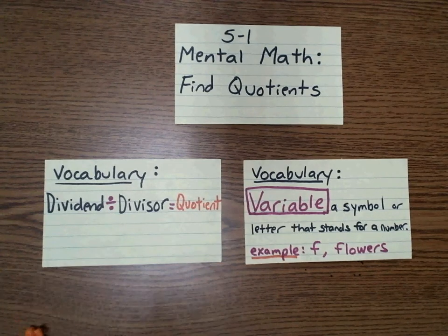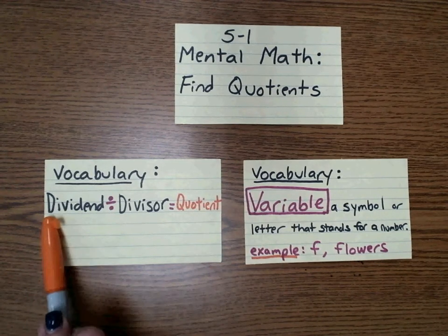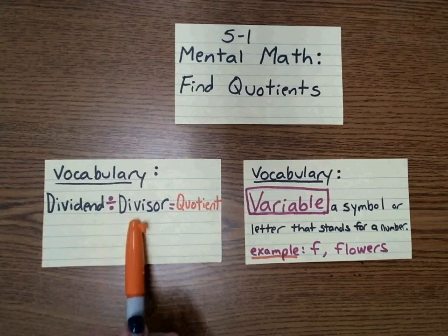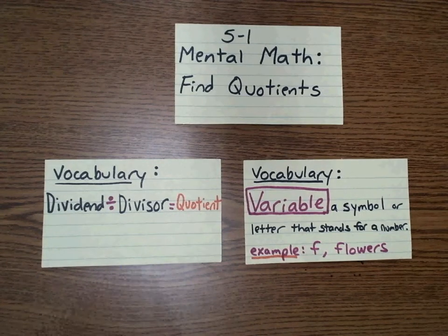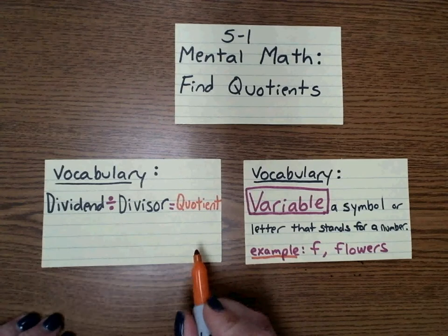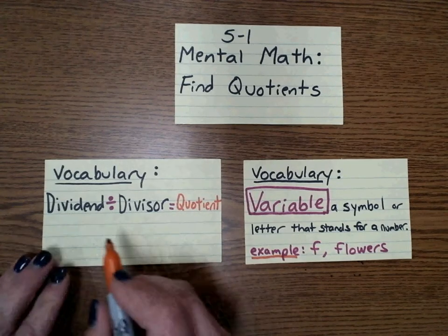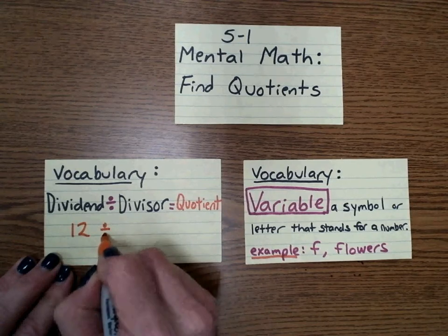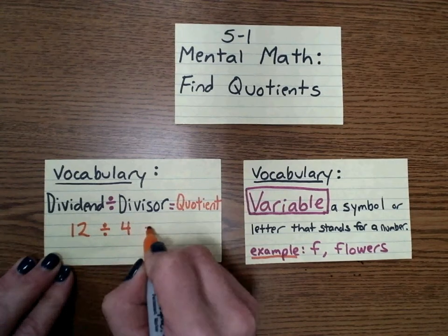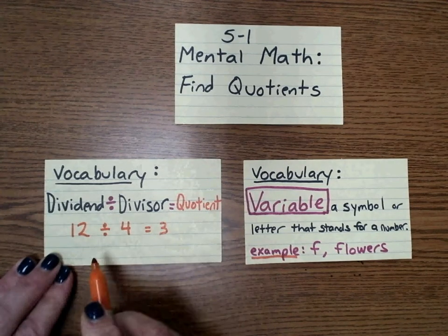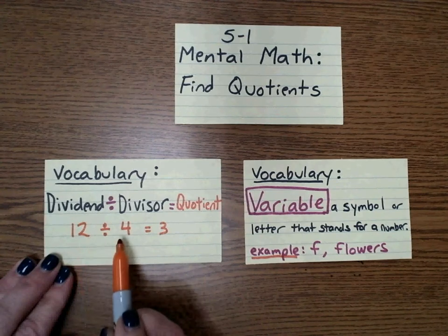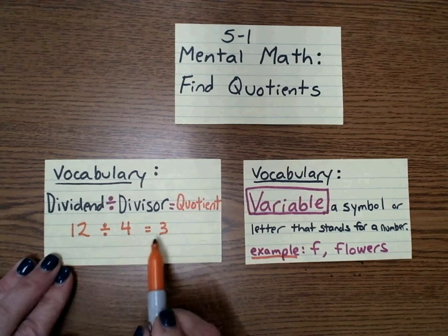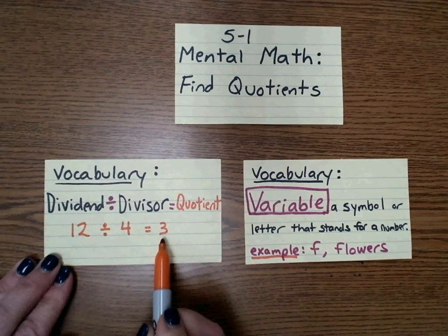When you're dividing, a dividend divided by a divisor equals a quotient. The quotient is the answer to the division problem. For example, if I had 12 divided by 4, that equals 3. 12 would be my dividend, 4 would be my divisor, and 3 would be my quotient.